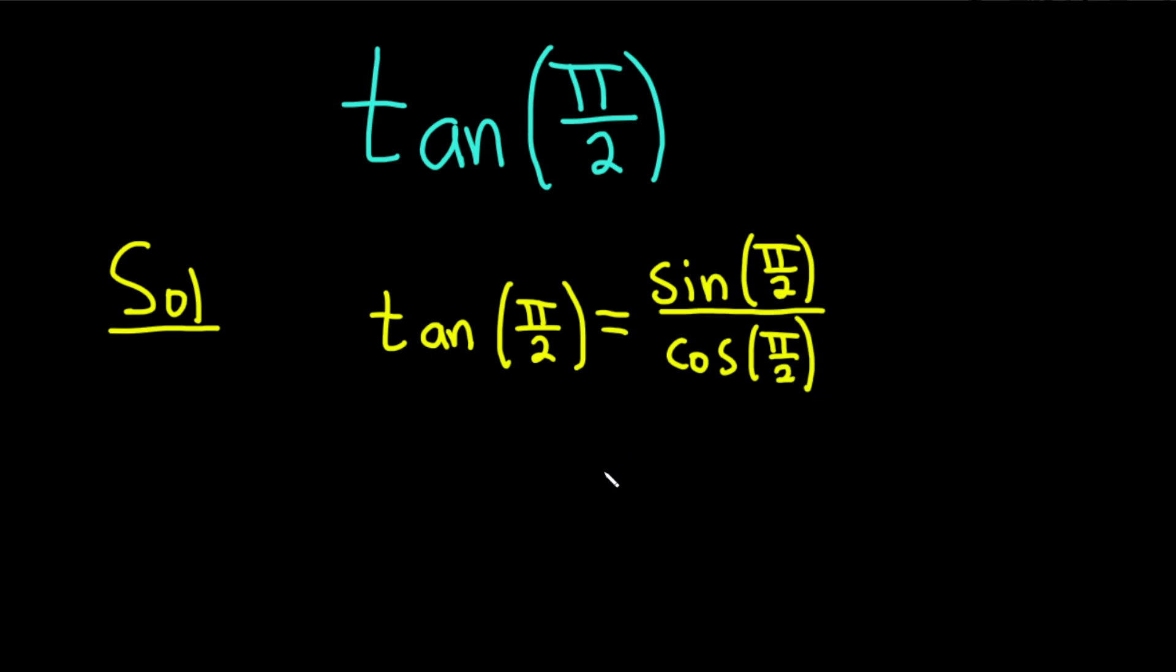And this is just one way to do it. I feel like this is an easy way. The sine of pi over 2 is going to be 1. The cosine of pi over 2 is going to be 0.